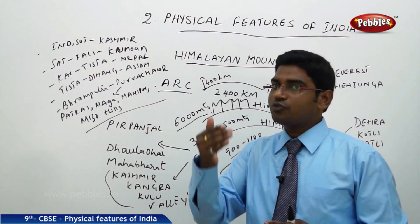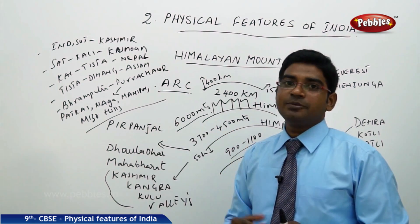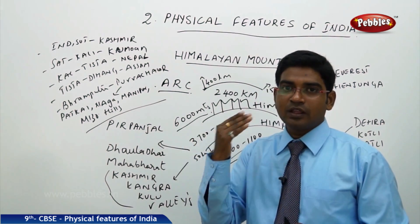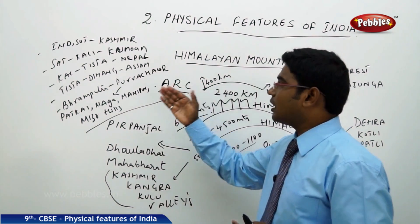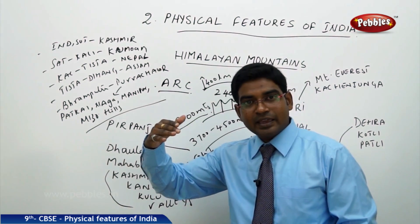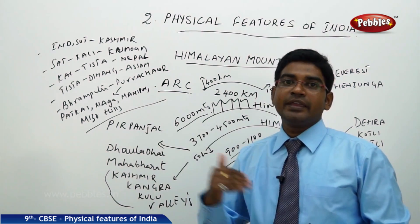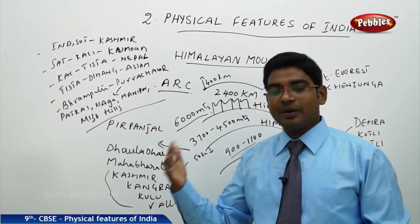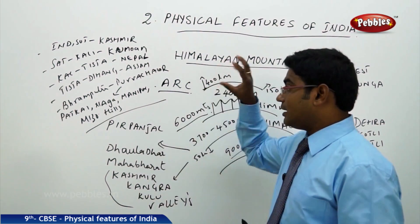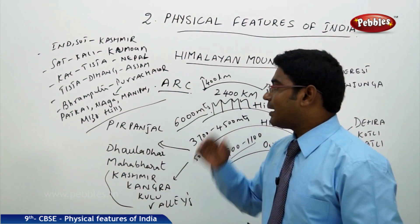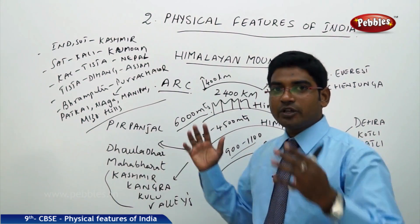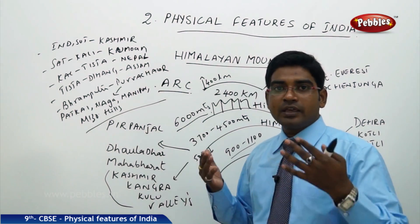From Tista to Dihang is known as the Assam Himalayan region. Dihang is another name for the Brahmaputra River when it flows through the Tibetan or Chinese region. After the Brahmaputra enters India, the Himalayas take a southward turn — this region is called the Purvachal Himalayas, which includes many hills such as the Patkai Hills, Naga Hills, Manipur Hills, and Mizo Hills, which may also have different regional names.